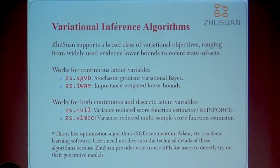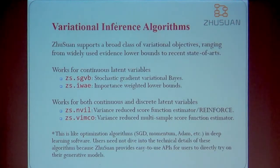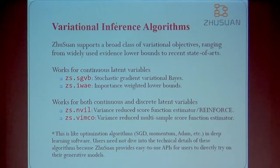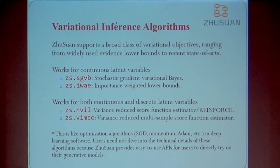In the library, we support both continuous and discrete latent variables. For continuous latent variables, we have stochastic gradient variational inference, and we even have a tighter bound using importance sampling. For discrete latent variables, we can use techniques to automate the gradient of the objective — the difficult part is controlling the variance using finite samples. There are some nice approaches like the REINFORCE algorithm and score function estimators. So we can use these for discrete models. The optimization can be done just like stochastic gradient descent for deep neural networks.